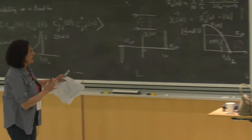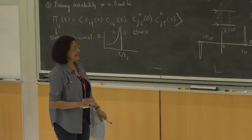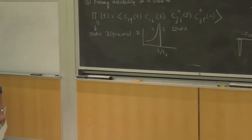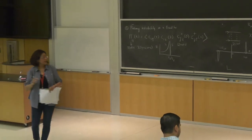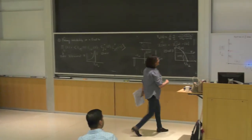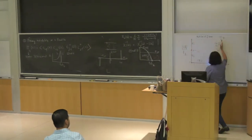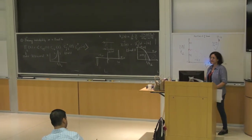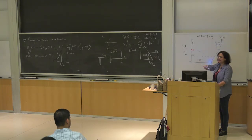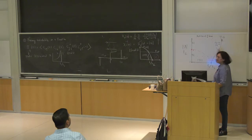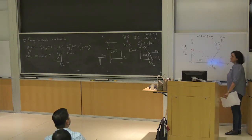Let me take a minute and see if everybody is on board with that. Are these second-order transitions? Yes — this is a second-order transition, essentially in the universality class of the (d+1)-dimensional XY model. Because it's 2D spatial and 1D coming from the quantum part, it's essentially in the 3D XY universality class.